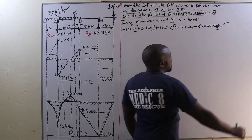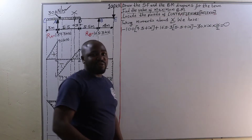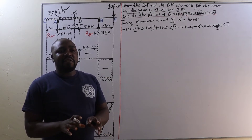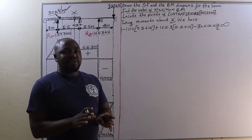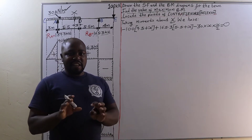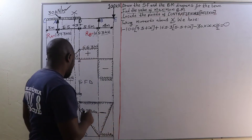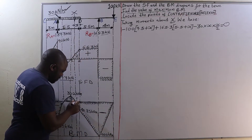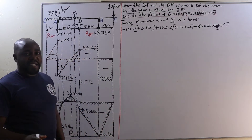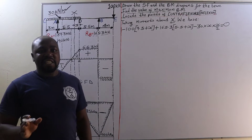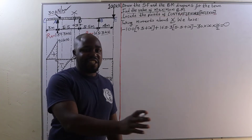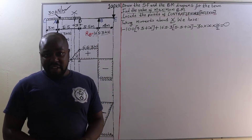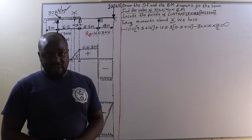We equate this equation to zero. The reason we equate it to zero is that at the point of contra flexure the bending moment is zero.